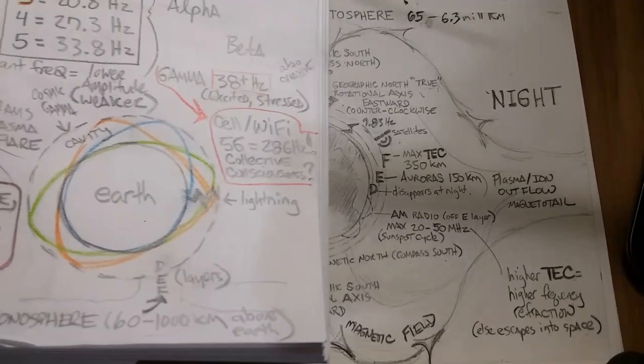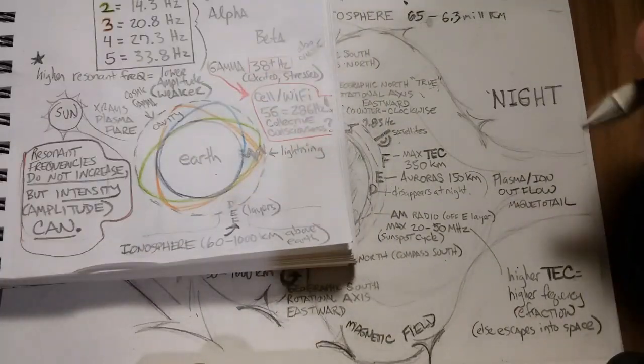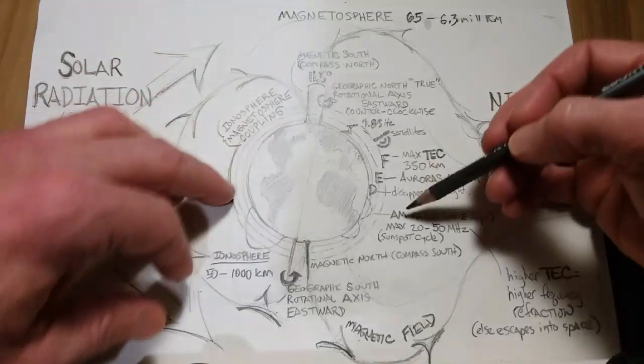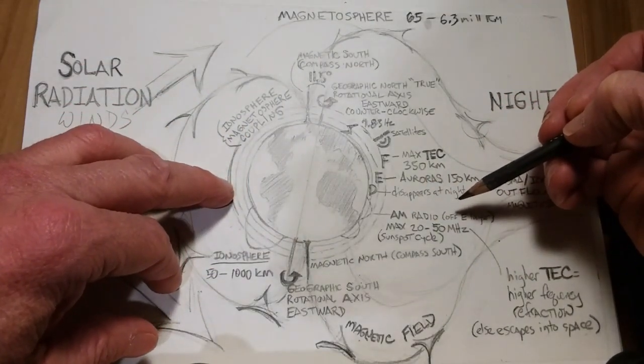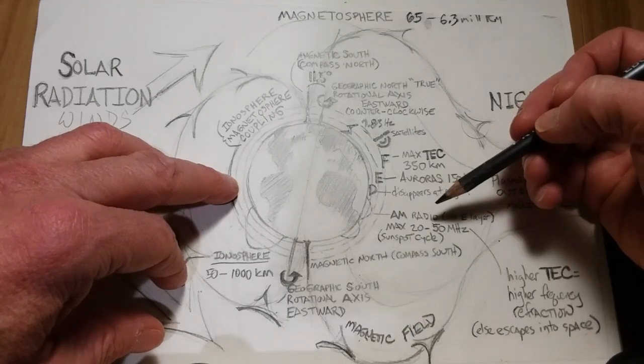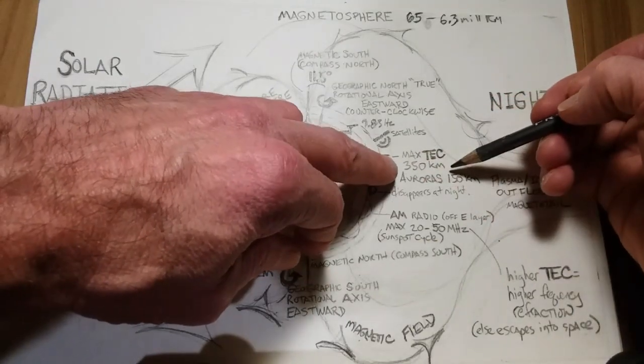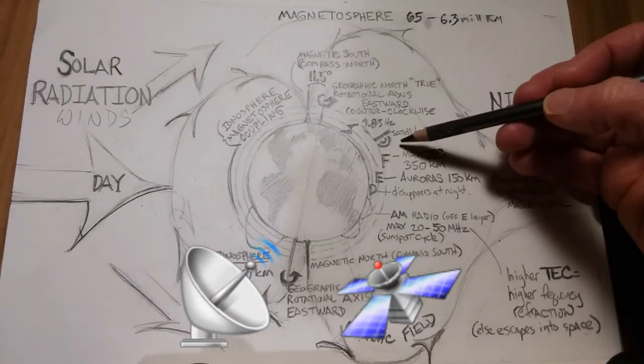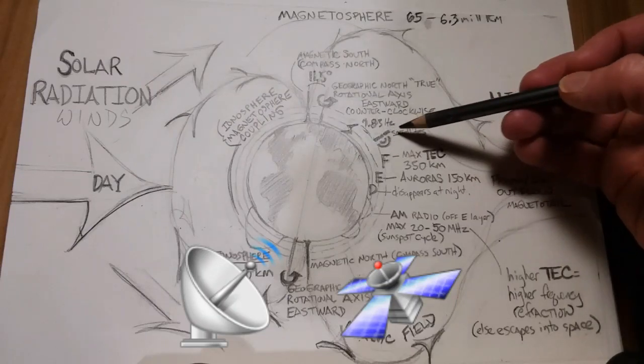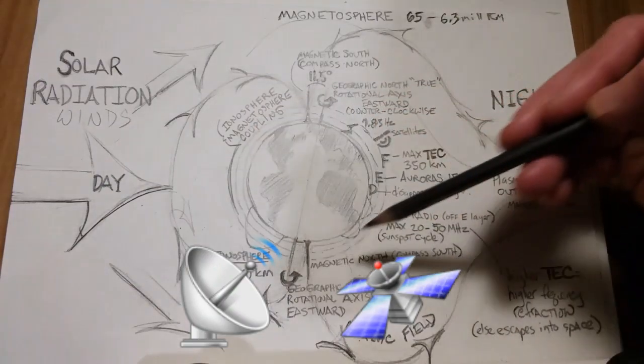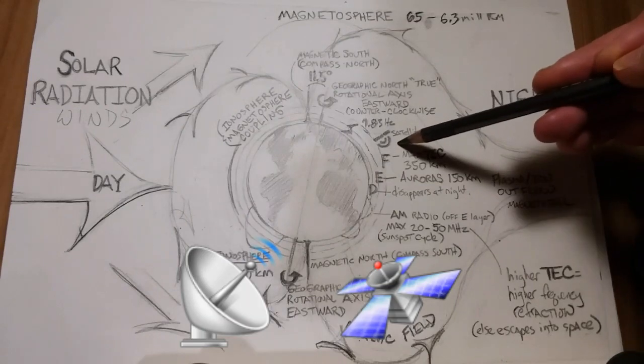So that accounts for the discrepancies of the mathematical formula for the Schumann response. And check out how dominant the 7.8 hertz frequency is as compared to the harmonics. And there are D, E, and F layers to the ionosphere going anywhere from about 50 to 1,000 kilometers above the Earth with the maximum total electron count in the F layer at about 350 kilometers. And just as a point of reference, the satellites typically travel north of 350 kilometers. This is a very safe altitude for satellites.